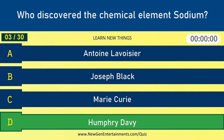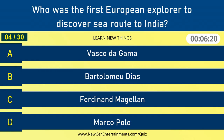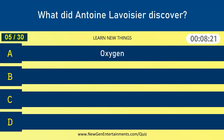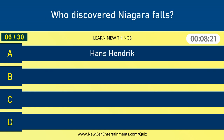Humphrey Davy. Who was the first European explorer to discover the Sea Road to India? Vasco da Gama. What did Antoine Lavoisier discover?